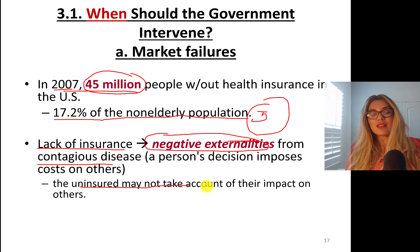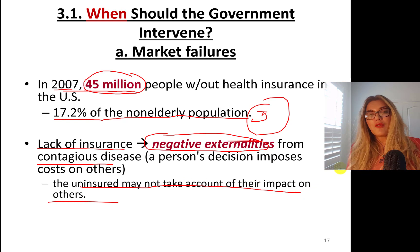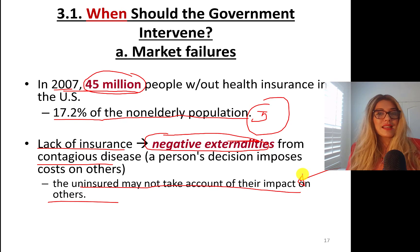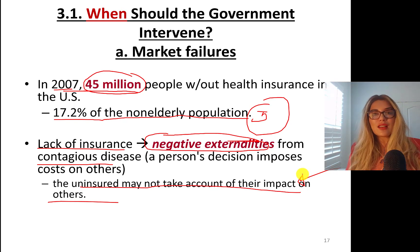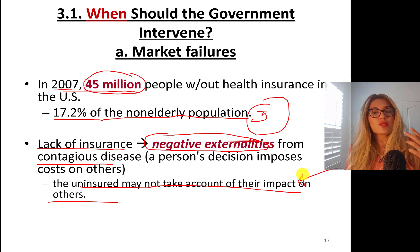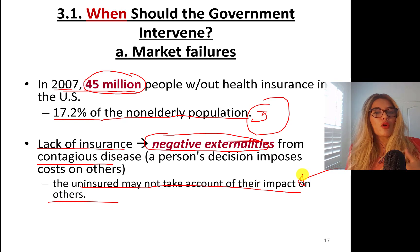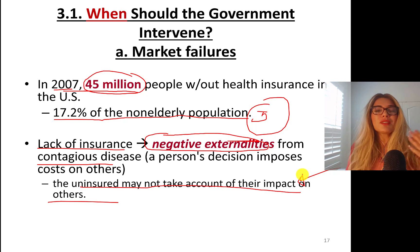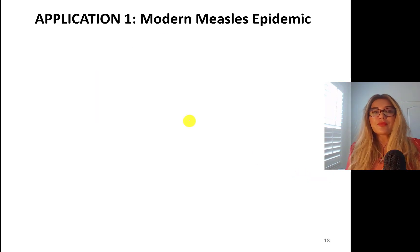Before 2007, people used to declare bankruptcy due to lack of insurance. If somebody in the family got cancer and faced $200,000 in hospital bills, they had to declare bankruptcy. They wanted to buy insurance, but insurance was really expensive. Not everyone is lucky enough to have employer-provided insurance, so the government created marketplaces to address this.